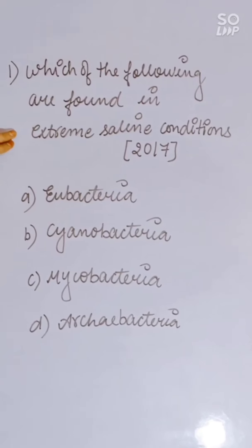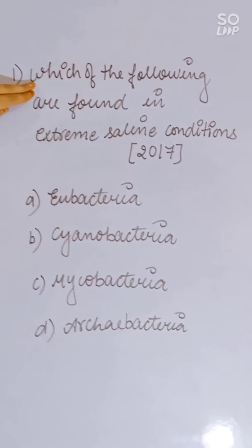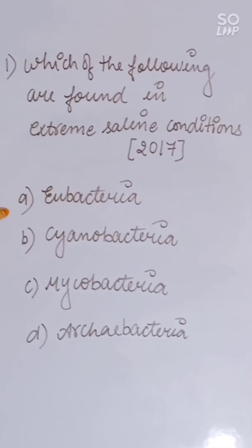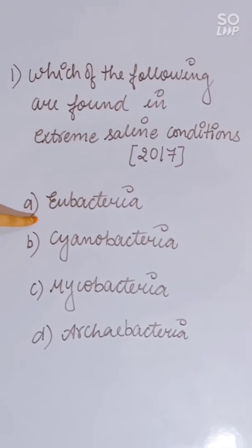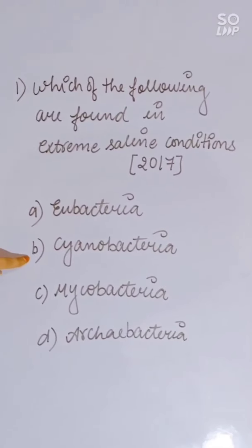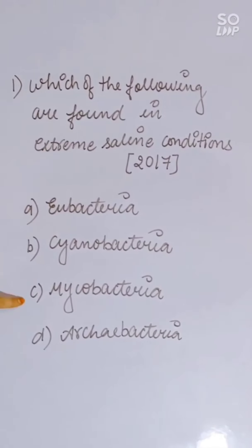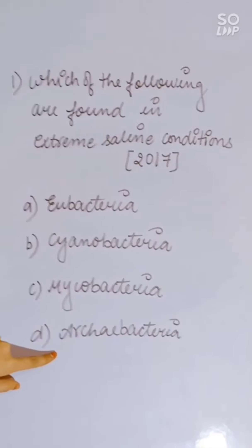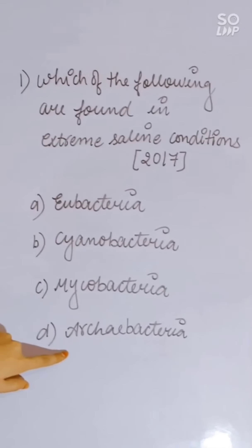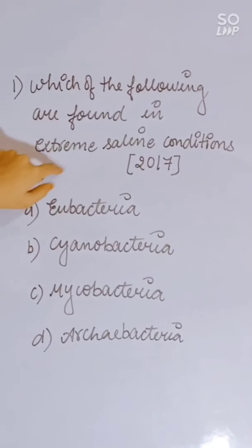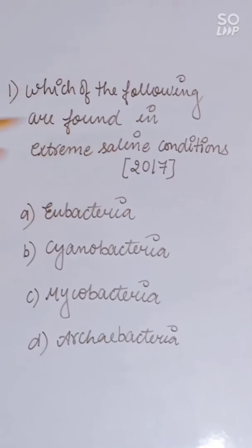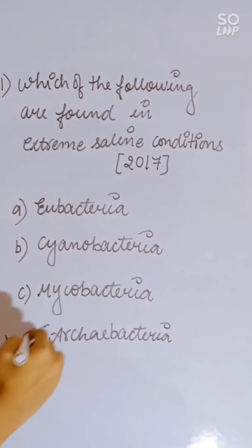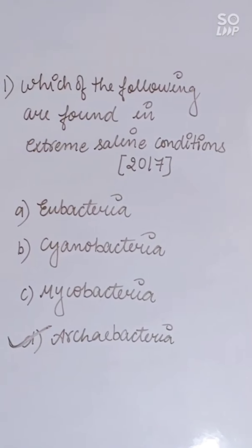NEET 2017 question: Which of the following are found in extreme saline conditions? Options: Eubacteria, Cyanobacteria, Mycobacteria, or Archaebacteria. Archaebacteria are found in extreme saline conditions. Correct answer is Archaebacteria.